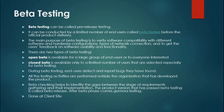Beta testing also collects user feedback on software usability and functionality before the development team hands over the product to the client. There are two types of beta testing. The first is open beta, which is available to a large number of end users. For example, companies like Microsoft release a beta version of software to the market before the full release, to collect reviews on whether the software fulfills user requirements.